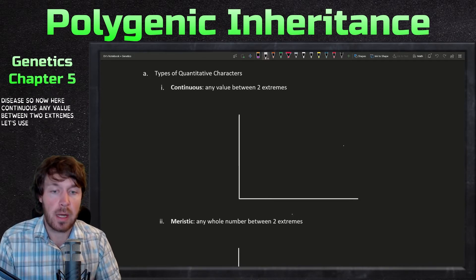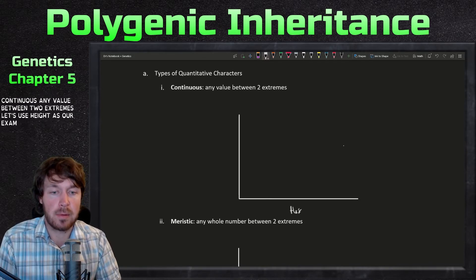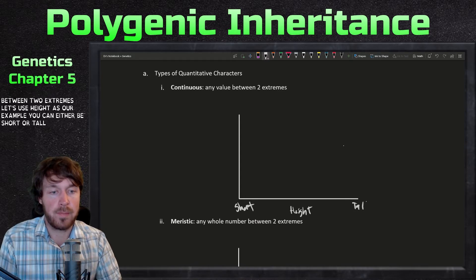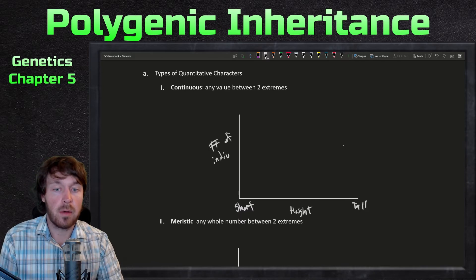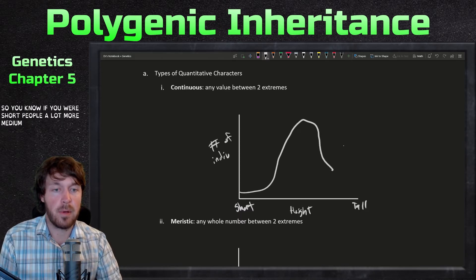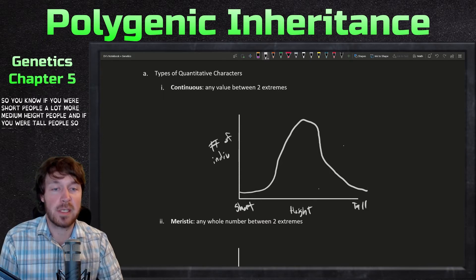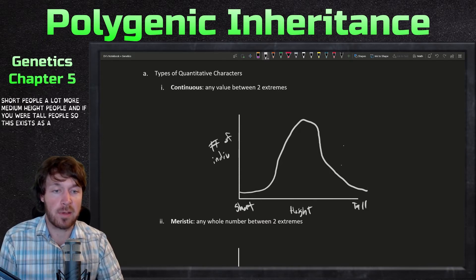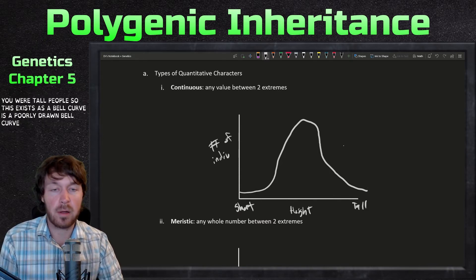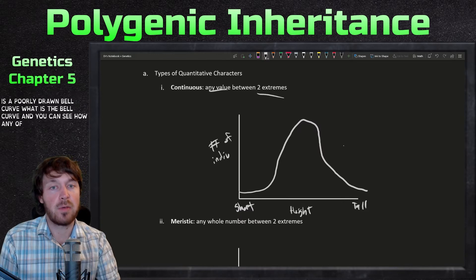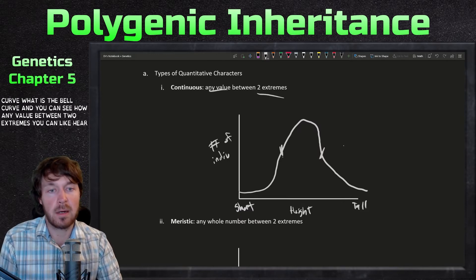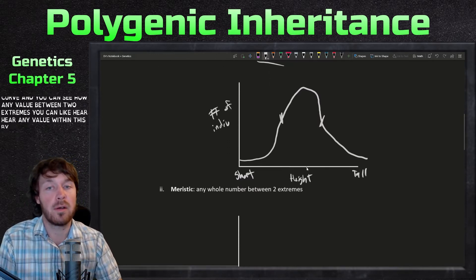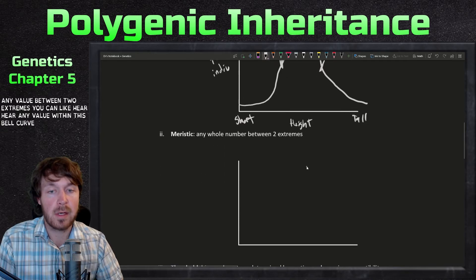Let's use height as our example for continuous characters. You can either be short or tall. Fewer short people, a lot more medium-height people, and fewer tall people — so this exists as a bell curve. It's a bell curve, and you can see how it's any value between two extremes. Any value within this bell curve is possible.